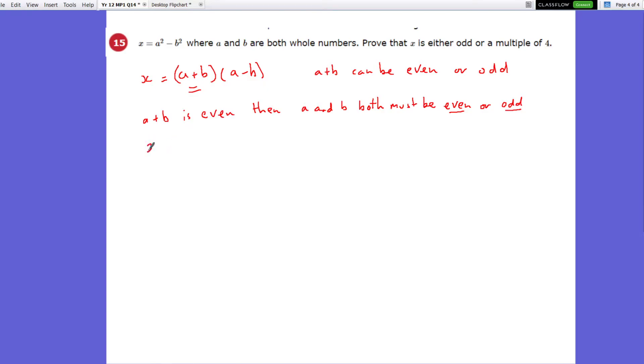So what you end up getting is x being equal to, so we get this first scenario where a plus b is an even number. So let's just call that 2n. And then we get the second bracket where we get the situation where when you're subtracting here the two even numbers or two odd numbers, we also get an even number in that situation. And 2n times 2m, that ends up being 4mn.